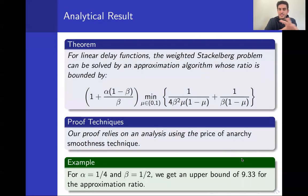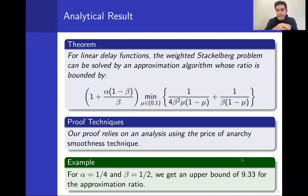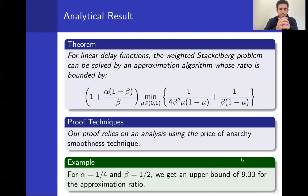Our theoretical result is shown in this theorem. For linear delay functions, the approximation ratio achievable is a complex closed-form expression. As an example, with alpha = 1/4 (access to 25% of traffic) and beta = 1.5 (scaling non-user costs down by a factor of 2), the upper bound on the approximation ratio is 9.33. The analysis uses the price of anarchy smoothness technique; details are in the paper.